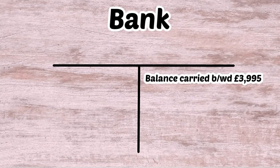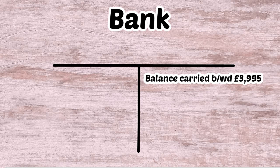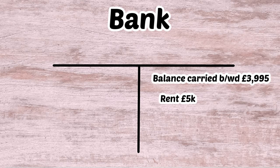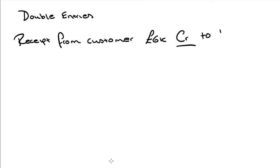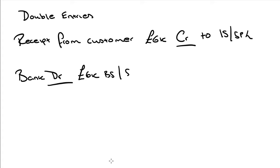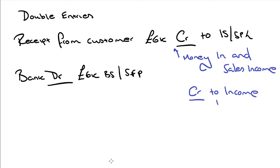Carrying the bank balance forward another year, the opening overdraft of £3,995 now appears on the right hand side because it's overdrawn. We then pay rent and wages of £3,000 on the right, but this time we receive a sales receipt of £6,000, which appears as a debit on the left because we're increasing the bank balance. The double entry is: credit sales income £6,000 in the income statement and debit bank £6,000.